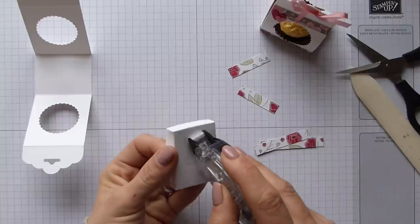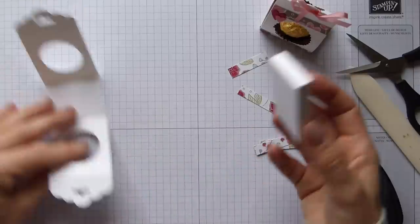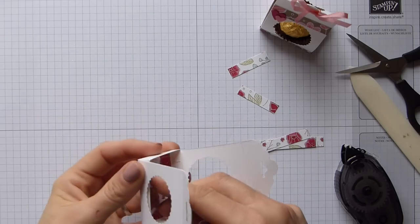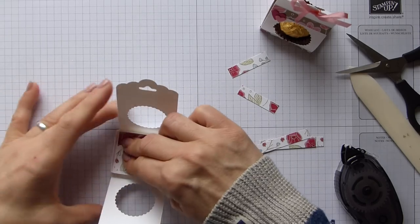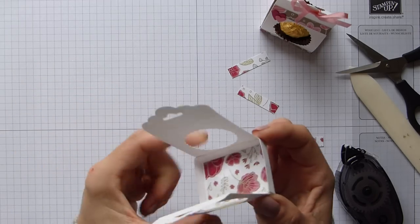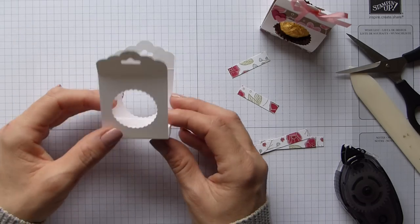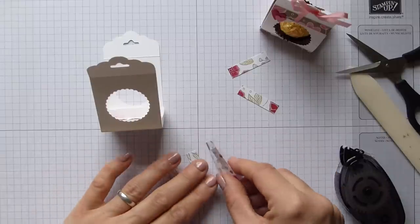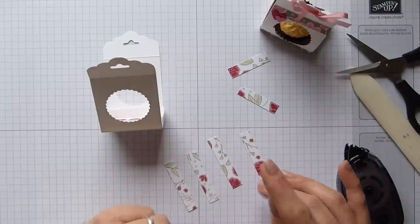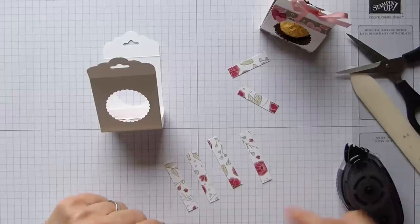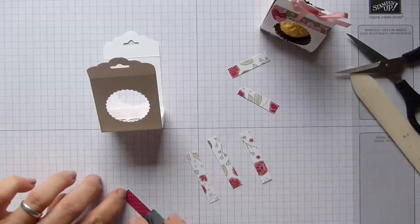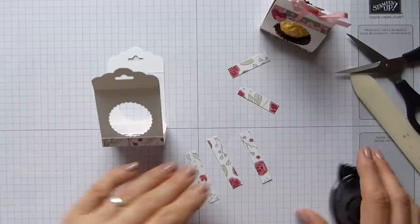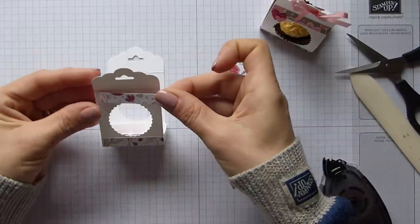And then just stick that in the bottom. And that sticks on. And then I'm going to pop snail or whatever adhesive you want to use on the bottom of the box. And then this will just sit inside. Just nicely in the bottom there. So it fits as a little basket. And then we need to decorate the fronts and sides. So you will need four strips of DSP that are three eighths of an inch or one centimeter by two inches, which is five centimeters.